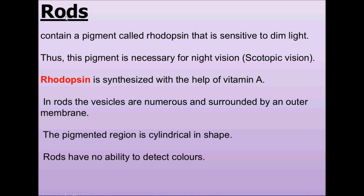First we will study rods in detail, and thereafter we will study cones. Rods contain a pigment called rhodopsin. Rhodopsin is a purple-red colored protein, also known as visual purple. It is present in rod cells and is a derivative of vitamin A. These rods contain rhodopsin, which is sensitive to dim light — when we see anything in dim light, rods are responsible for it.